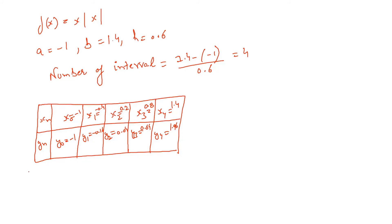So now if we use the Simpson's third rule. Let me just write according to minus 1 to 1.4, x of mod of x into dx which is equal to h by 3, y naught plus y4 plus 2 times of y2 plus 4 times of y1 plus y3.